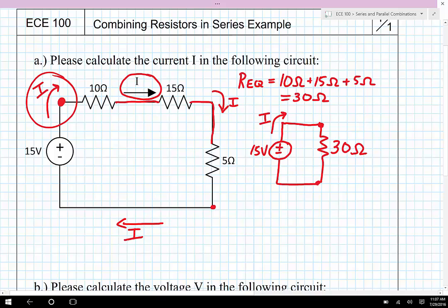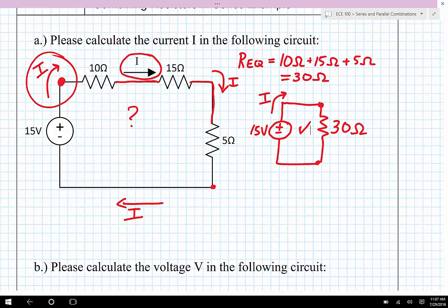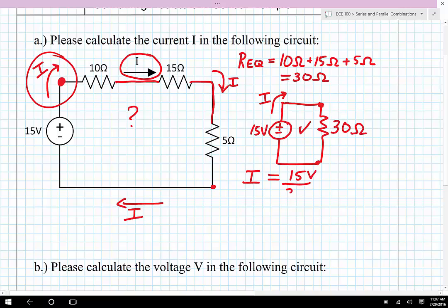So what we're asked to do is to find I, although it would be kind of hard to find I in the original circuit, not impossible, but kind of hard, it is totally easy to find it in the revised circuit because I is just going to be the current through a single resistor. And that's 15 volts. 15 volts divided by 30 ohms gives me 0.5 amps.